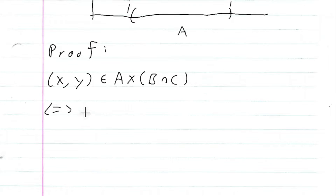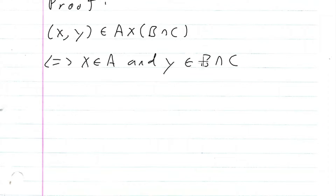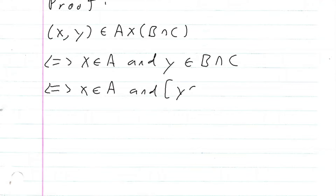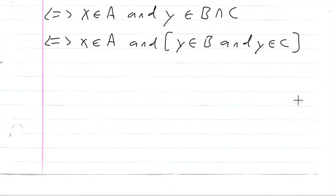Using the definition of cross product, this means that x is an element of A and y is an element of B intersection C. Now using the definition of intersection, this means x is an element of A, and y is an element of B, and y is an element of C.